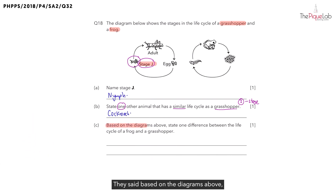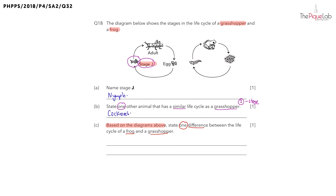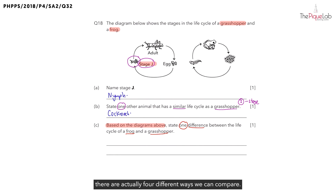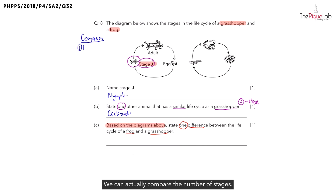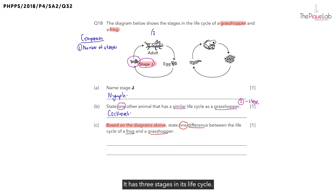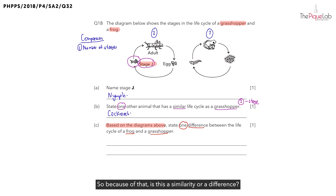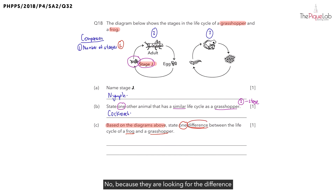Now let's look at part C. Based on the diagrams above, they want us to state one difference between the life cycle of a frog and the grasshopper. Whenever we compare between the life cycles of two animals, there are actually four different ways we can compare. The first way is to compare the number of stages. For the grasshopper, it has three stages in its life cycle. The frog also has three stages. Because they are the same, this is a similarity — not a difference — so we cannot write down the number of stages. Let's cross it out.